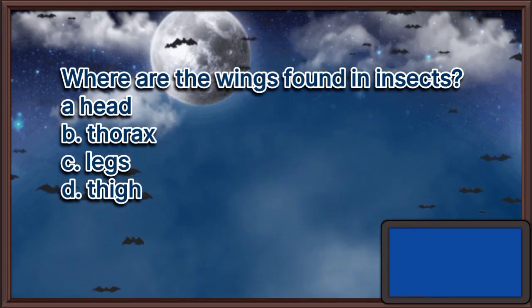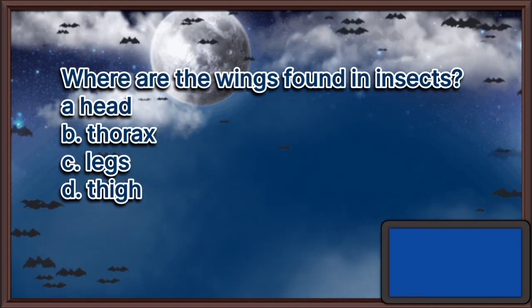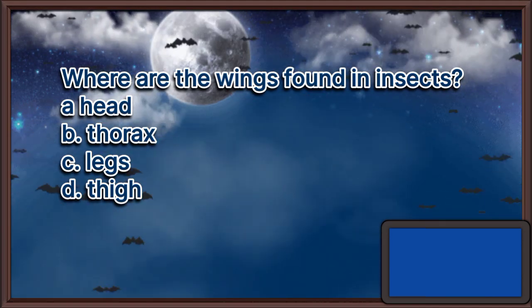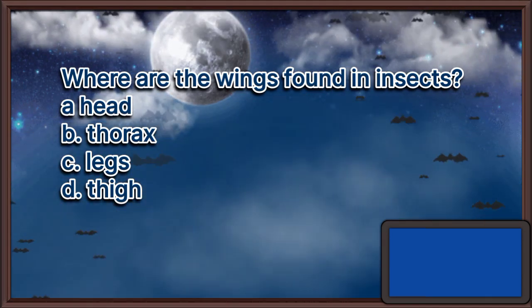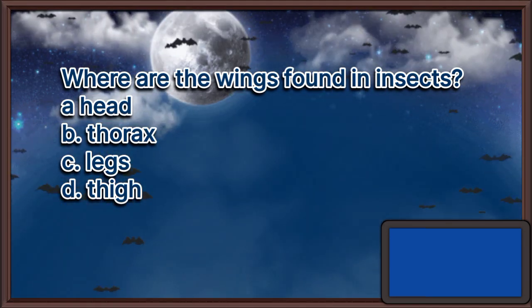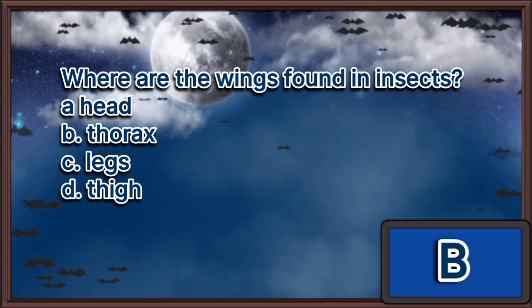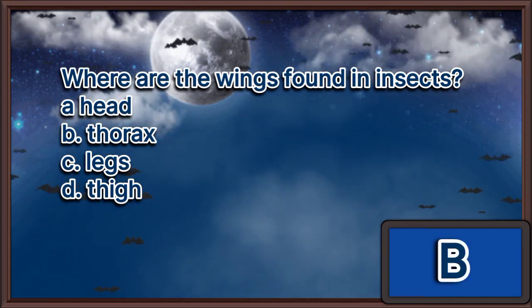Where are the wings found in insects? A. Head, B. Thorax, C. Legs, D. Thigh. The answer is letter B.